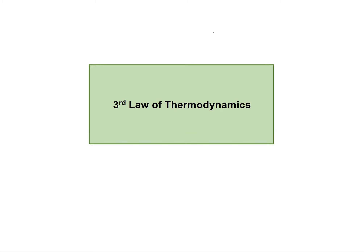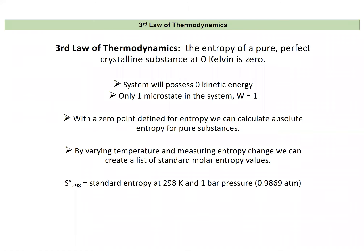In this video we're going to discuss the third law of thermodynamics. The third law states that the entropy of a pure perfect crystalline substance at zero Kelvin is zero. Zero Kelvin is absolute zero, when a system possesses zero kinetic energy, because temperature is proportional to kinetic energy. In this state there should only be one microstate in the system — w equals one, which is unique.